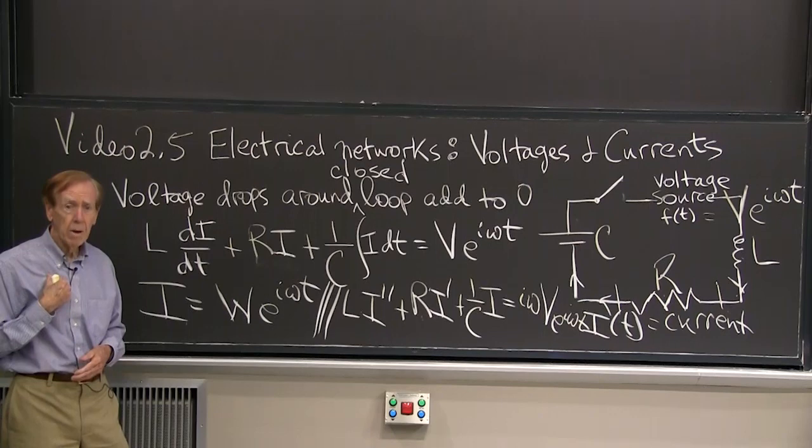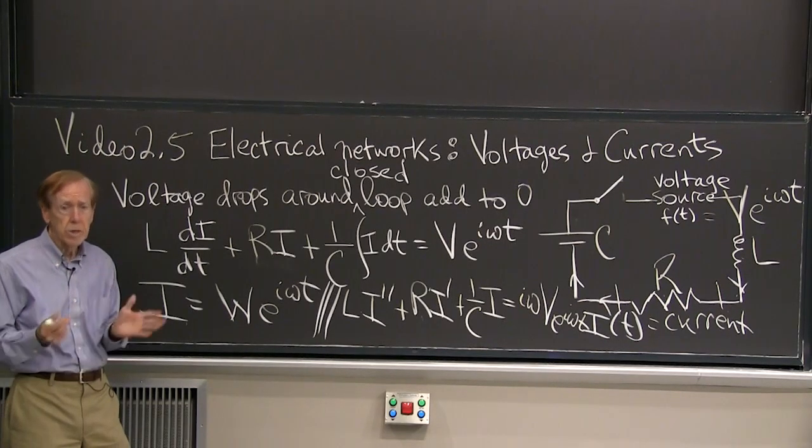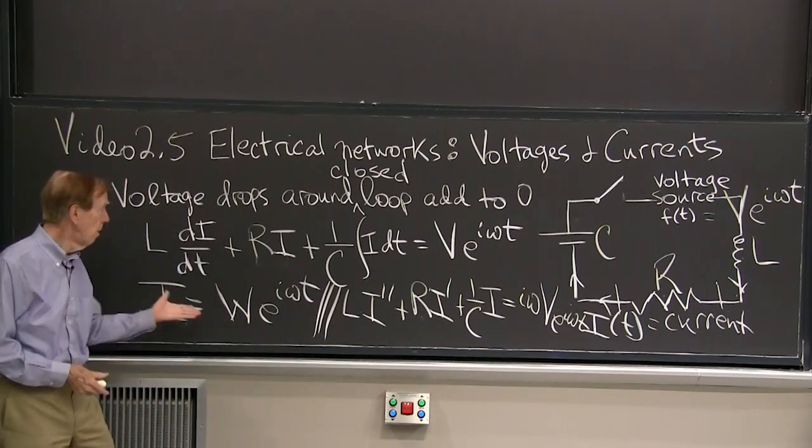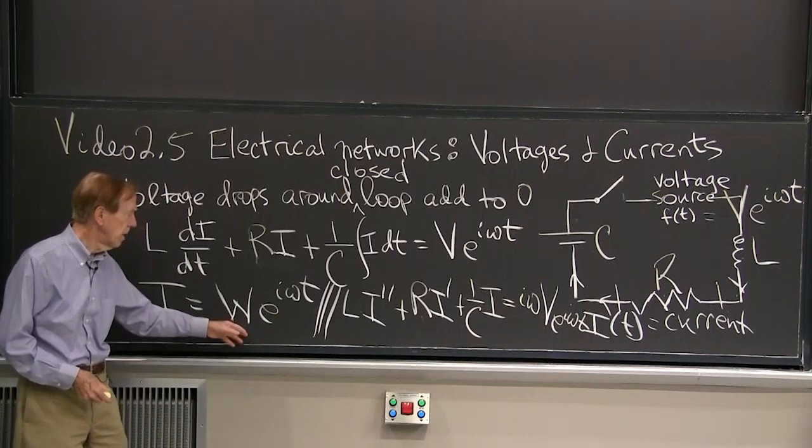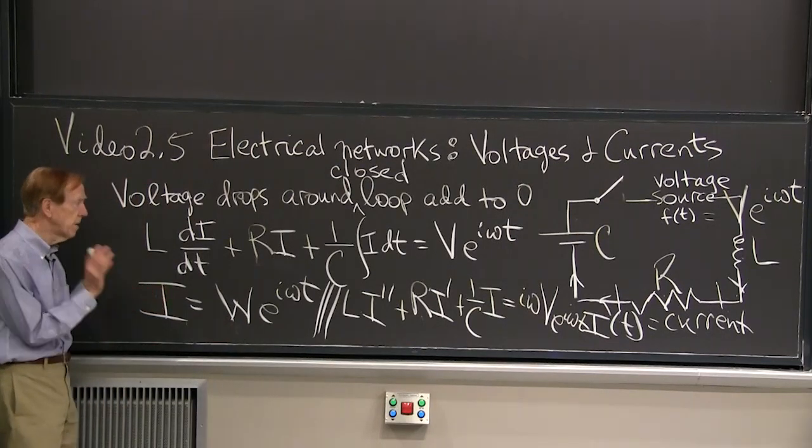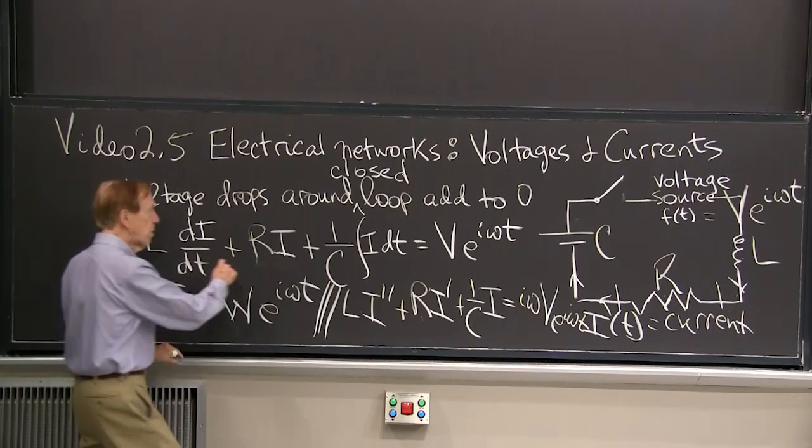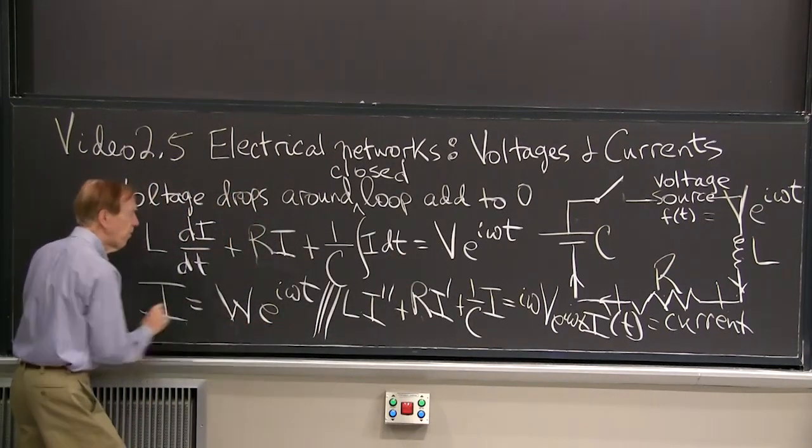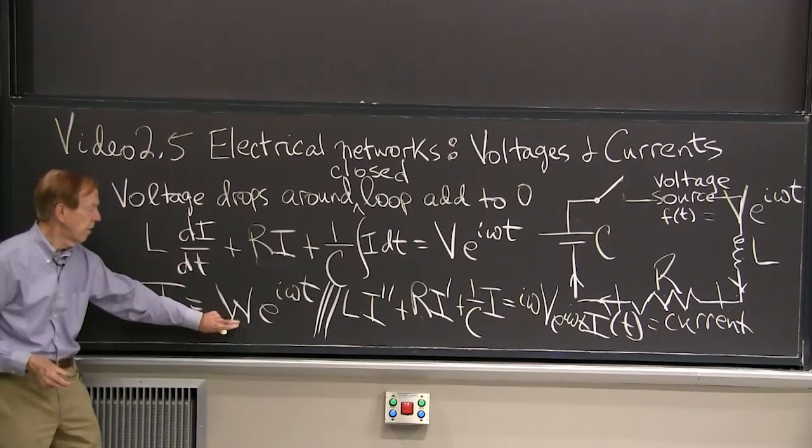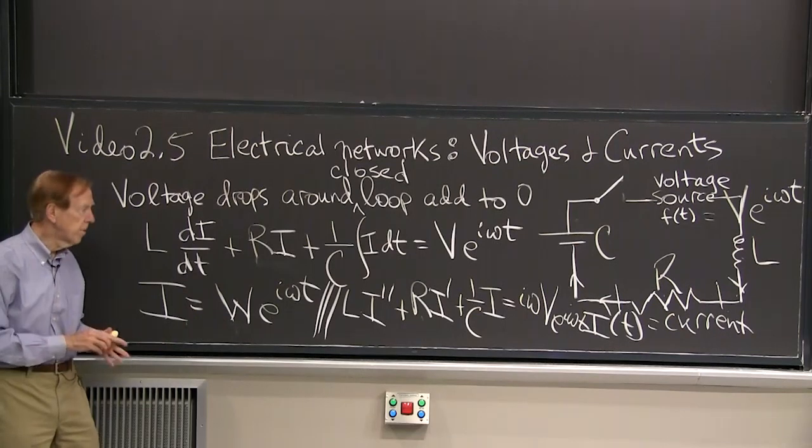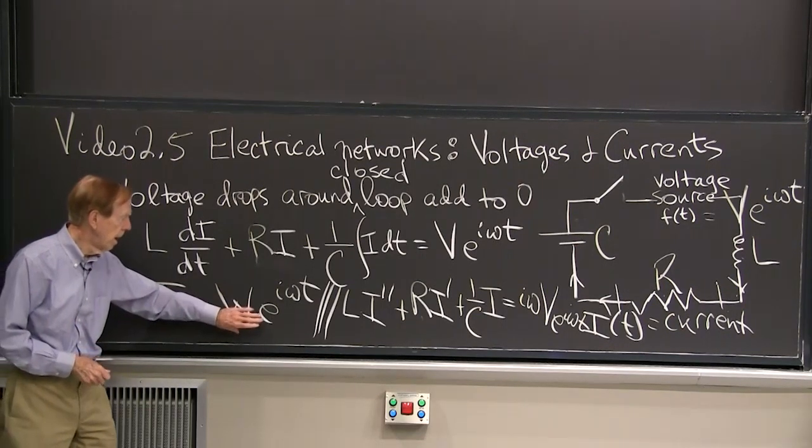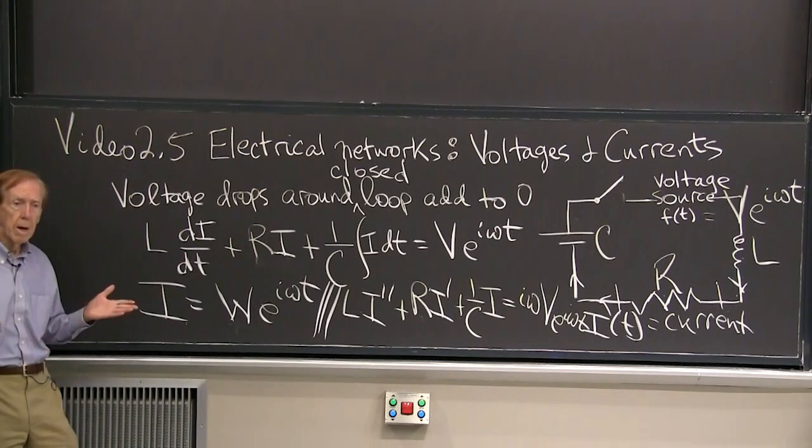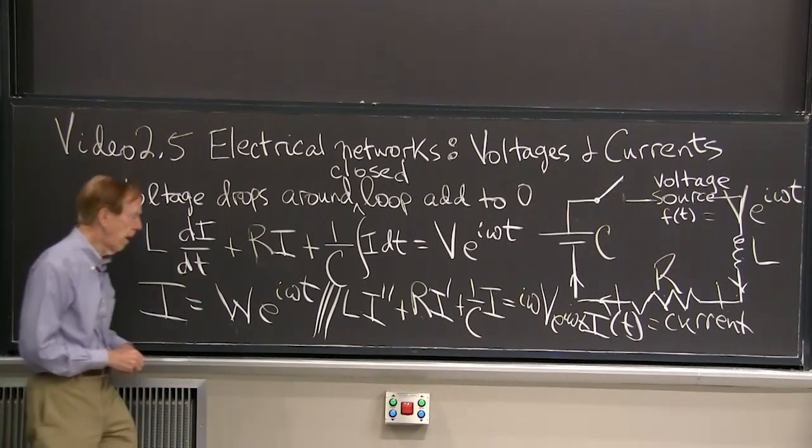But we're not creating an analog computer here. We're just doing differential equations. So why don't I figure out what that w is? As always, I have this equation. I have a pure exponential. I look for a solution of that same form. I plug it in, and I get an equation for w. That's exactly what I'll do on the next board. I'll put w e to the iωt into this equation and find w.